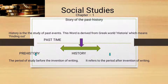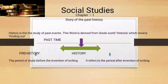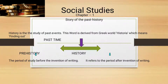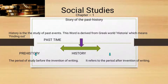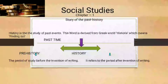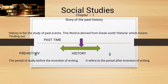When we study history, we want to know what history is. We will study about history in detail. History is the study of past events. This word is derived from the Greek word historia, which means finding out.